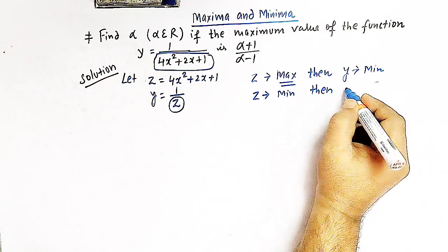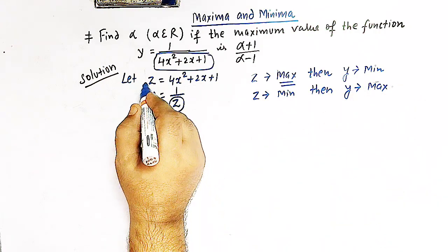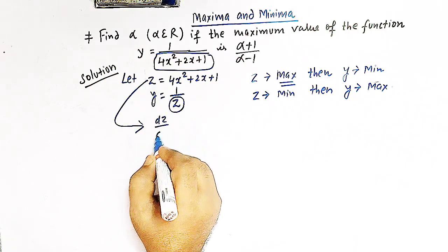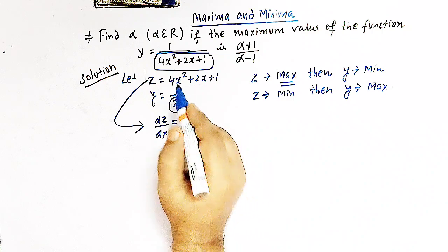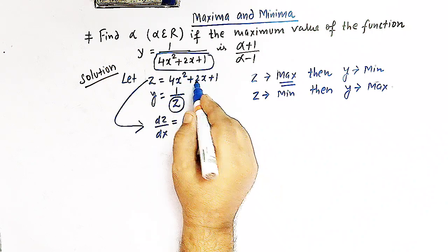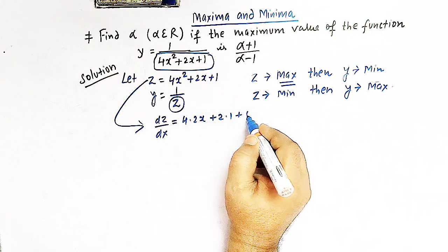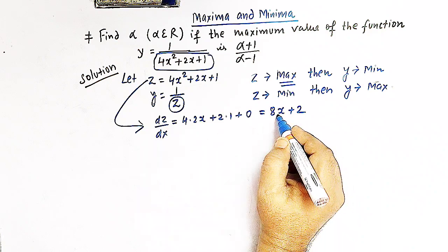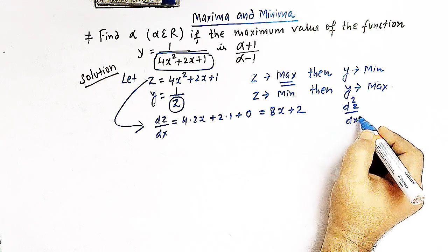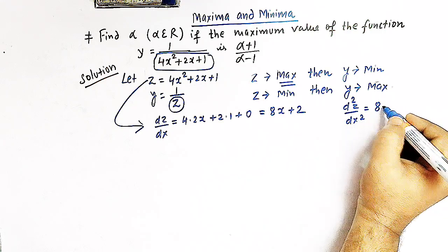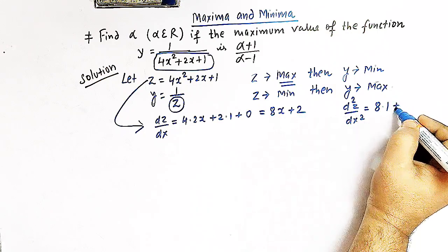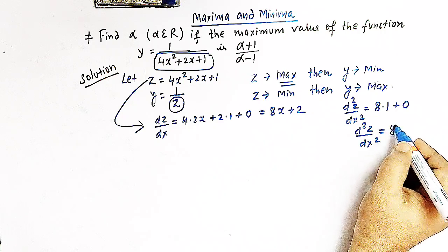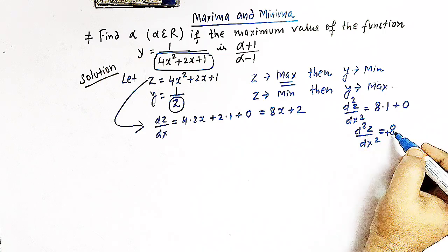Let us find the values of x for which z is maximum or minimum by differentiating z with respect to x. So dz/dx = 4 times 2x plus 2 times 1, giving us 8x + 2. The second derivative d²z/dx² is 8, since the derivative of 8x is 8 and the derivative of the constant 2 is 0.